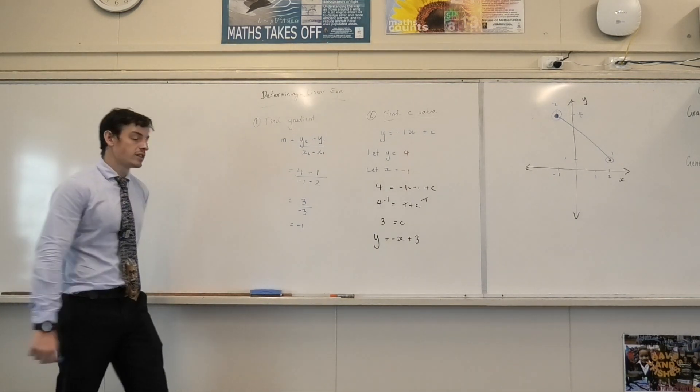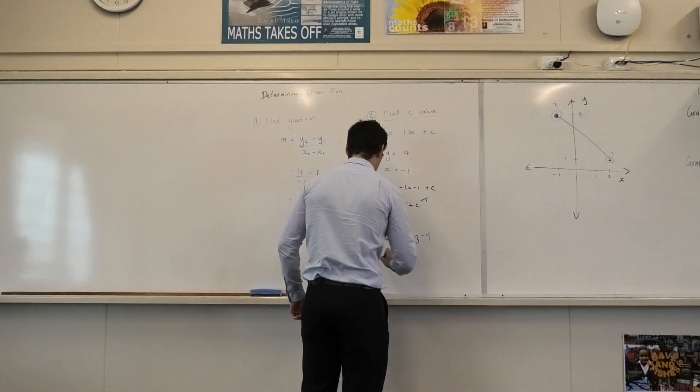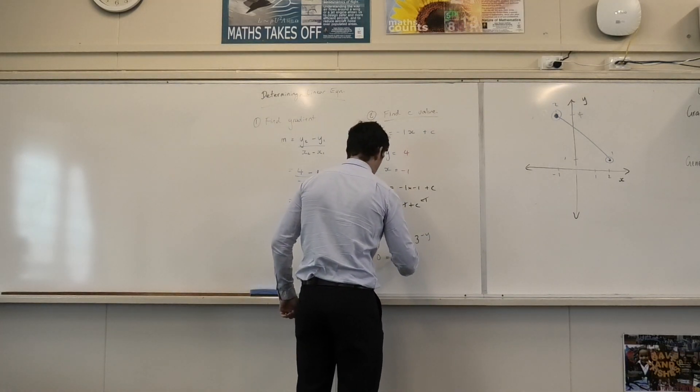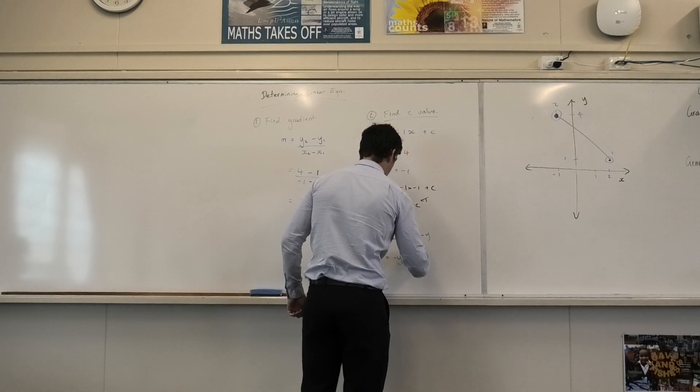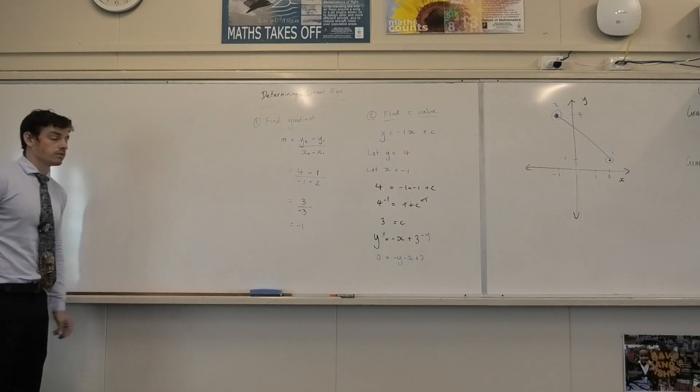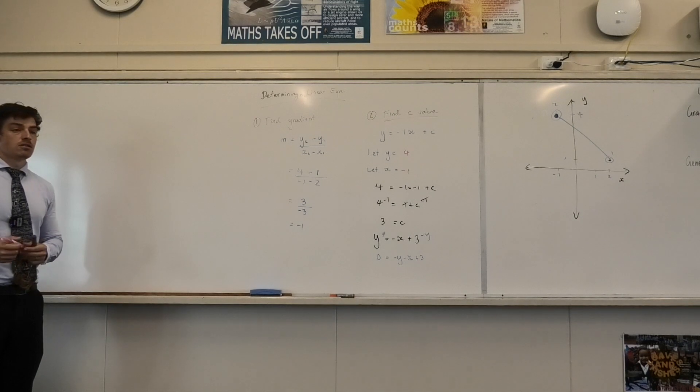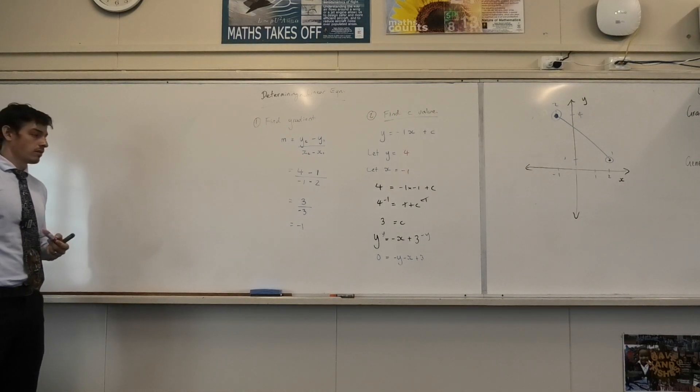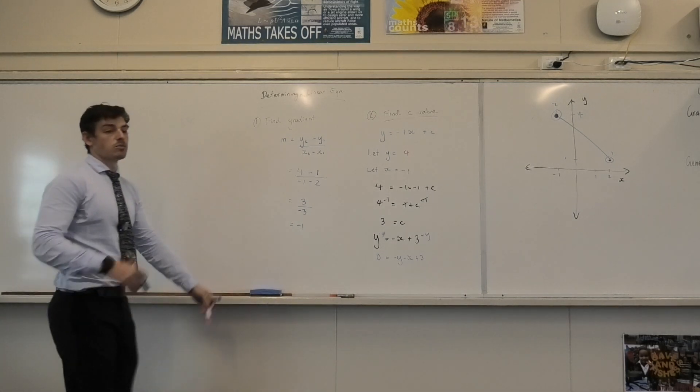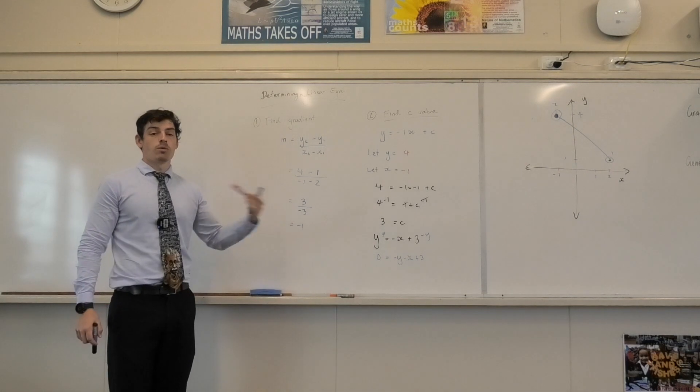Could you take y? I could take y, couldn't I? So I would have minus y on both sides and I'd get zero equals negative y minus x plus 3. I could do that, yes. What else could I do? Instead, if I wanted to do it differently. Add the negative x and three to both sides. Yes, so I could have added x and subtracted 3 from both sides and taken the other side. Cool? So it doesn't matter which side of the zero.